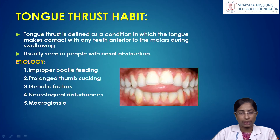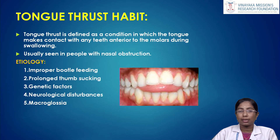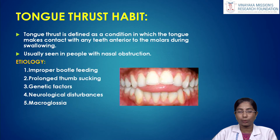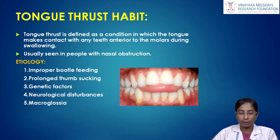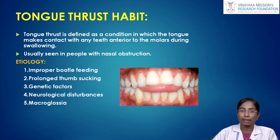Tongue thrusting is a condition in which the tongue makes contact with any tooth anterior to the molar during swallowing, and is usually seen in people with nasal obstruction. The etiology of tongue thrusting includes improper bottle feeding, prolonged thumb sucking, genetic factors, neurological disturbances, or anatomic factors such as macroglossia.